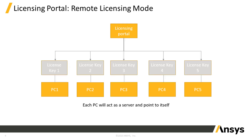With remote licensing, each PC will act as a license server. The client applications running on that PC will point to itself for licensing. Each PC will have a separate license key that will need to be generated and downloaded from the licensing portal. In this example using five PCs, five license keys will need to be generated in the licensing portal using the individual host information for each of the five PCs, resulting in five separate license keys to be downloaded for the respective PCs.